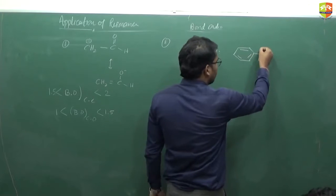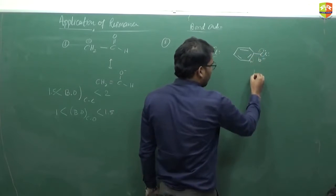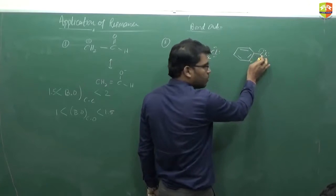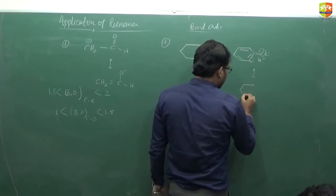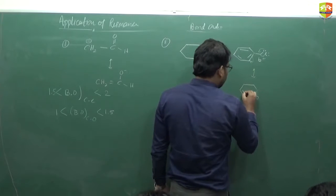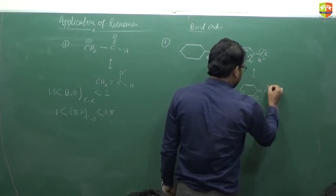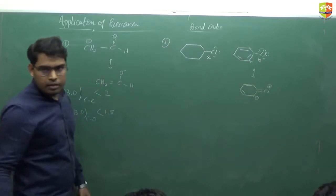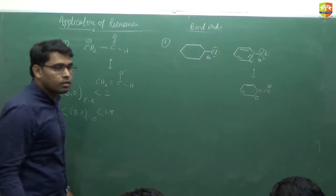We can draw the resonating structures of chlorobenzene. When you draw the resonating structures you will have partial double bond characteristics between carbon and chlorine — with negative charges and double bonds, Cl becomes positive. Because of this partial double bond character, the bond order of bond B is more than that of bond A.